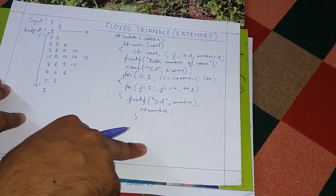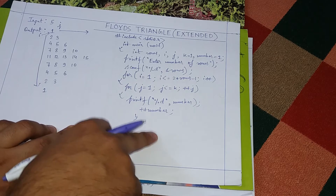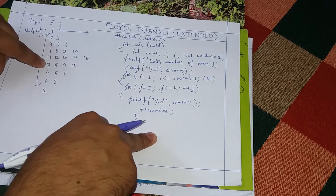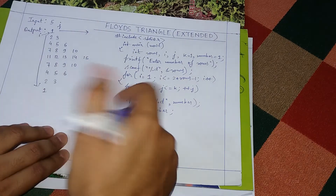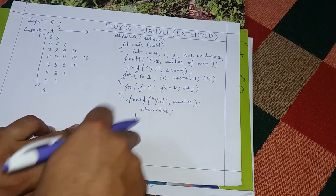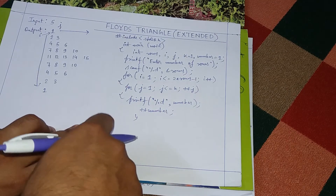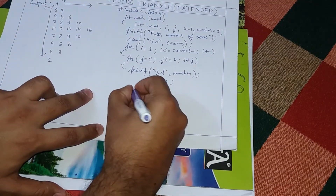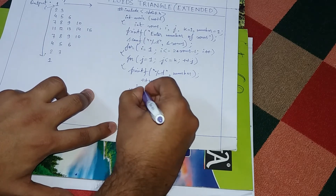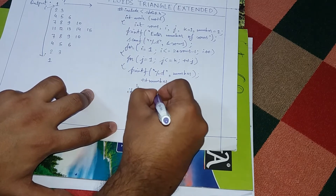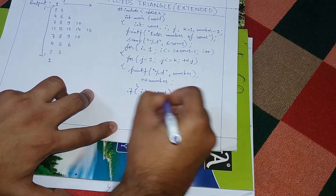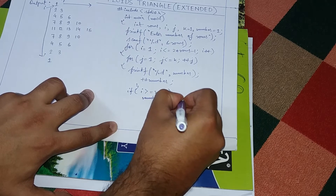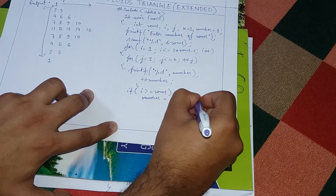We will now set the condition for k. The number must print in increasing order, but after fifteen it has to come back to seven. After the j-loop closes, before closing the i-loop, we do certain operations. We write: if i is greater than or equal to rows, set number equal to number divided by two minus one.